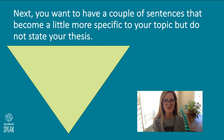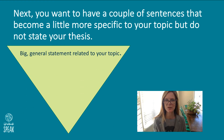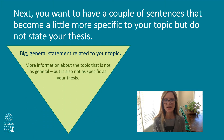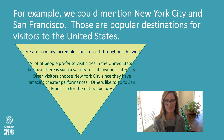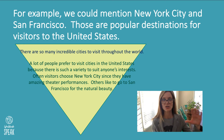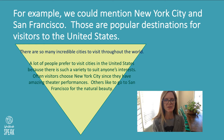Next, you want to have a couple of sentences that become a little more specific to your topic, but that are not as specific as your thesis. The first sentence of your introduction paragraph is going to be that big general statement related to the topic. Then next, you're going to have more information about your topic, a little more specific, but not as specific as your thesis. For example, we could mention New York City and San Francisco as a couple of popular destinations for visitors in the United States. It's not the best city in our opinion, but they are other cities in the United States. So we've gone from the world to the United States — general to more specific — and we've mentioned a couple of cities, but not the city that we think is the best.